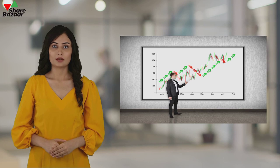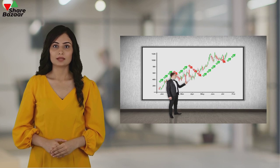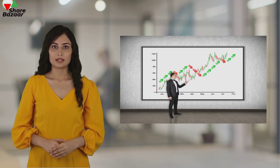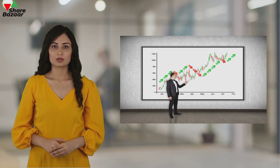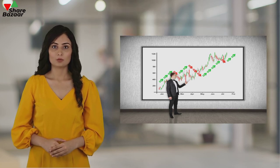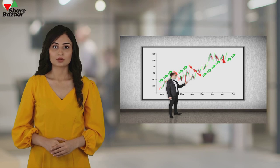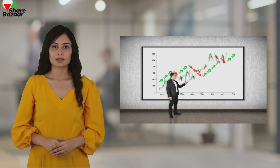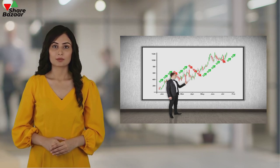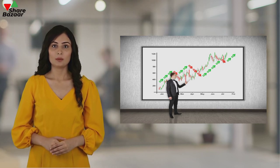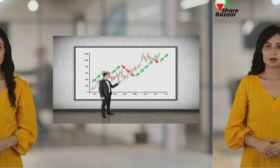There are two types of EPS: basic EPS and diluted EPS. Basic EPS is calculated by dividing the net profit or loss attributable to common shareholders by the weighted average number of common shares during the period. This gives an indicator of the company's profitability on a per-share basis.